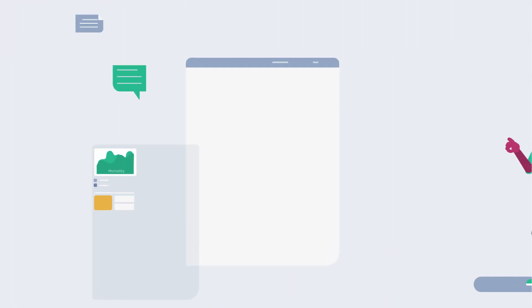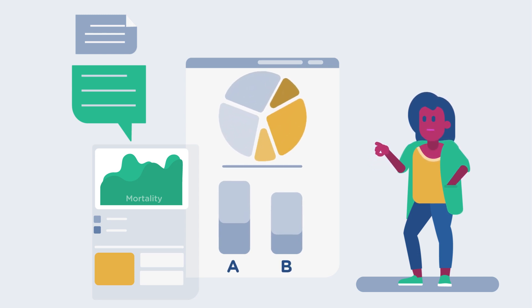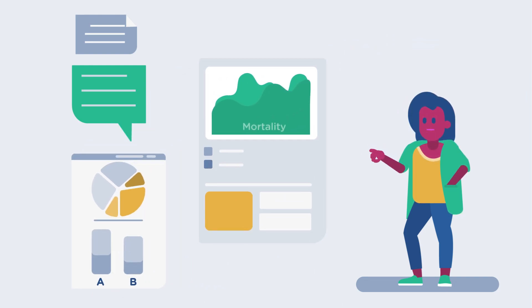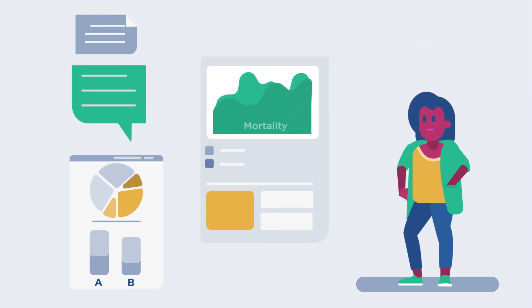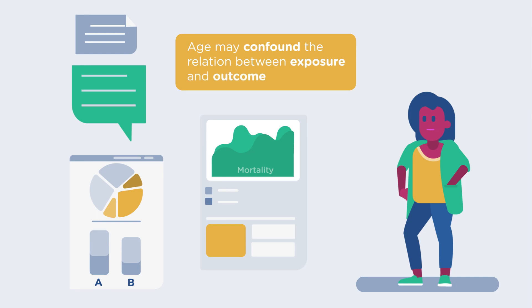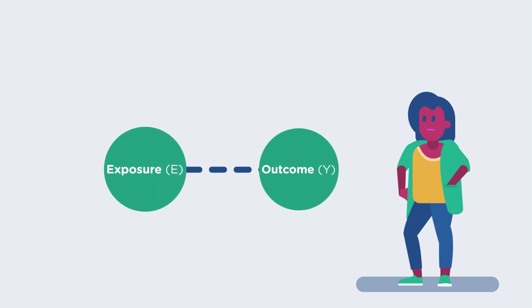When we look at the results, however, we might ask ourselves if the effect that we saw was actually caused by the treatment with the chemotherapy. The difference between the groups might also be caused by other reasons than the exposure. For example, mortality within our exposed group might be lower because the exposed group was younger than the non-exposed group. In other words, age may confound the relation between exposure and outcome. In situations of confounding, we see a relationship between exposure E and outcome Y that can actually be explained by confounder C.